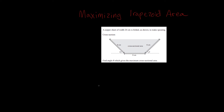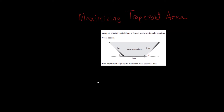Hey everyone, how's it going? In this problem, we're going to work through an example that involves maximizing the area of a trapezoid. The problem says a copper sheet of width 24 centimeters is folded, as shown, to make spouting. Here's a cross-section area, and what we have to do is find the angle theta which gives the maximum cross-sectional area.